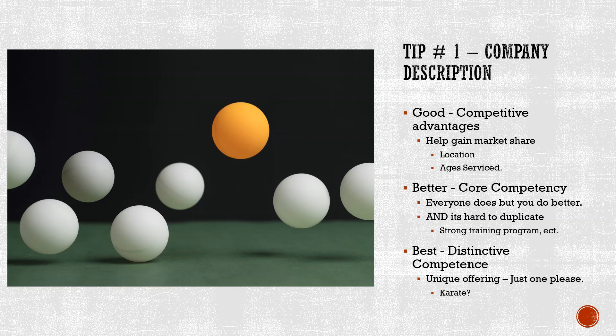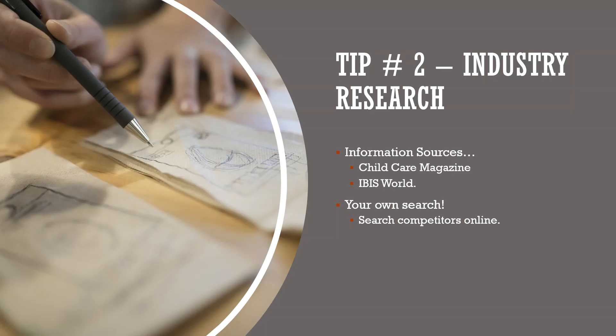Consider an additional amenity parents can purchase that isn't offered elsewhere — for example, karate. Teaching kids self-defense is not a bad idea; you could work out an arrangement with a local karate instructor to come in twice a week. That's a service competitors aren't offering. Identifying a distinctive competence in your competitive advantage section puts you head and shoulders above the competition.